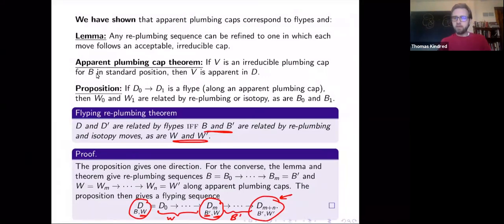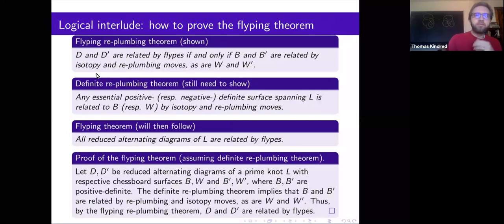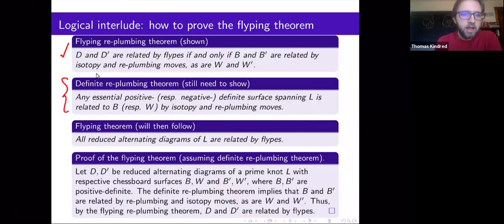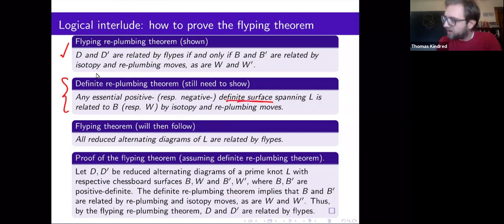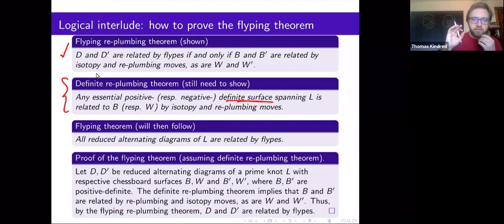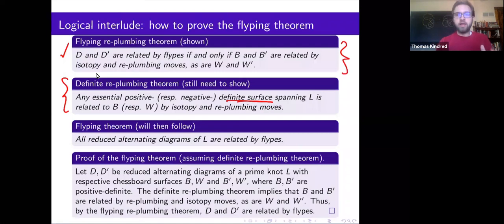How is the proof of the Flype theorem going to go? The key theorem says: if you have any essential positive definite surface, it's related to any other essential positive definite surface spanning the same link by isotopy and re-plumbing moves. And the first theorem says if they're related then the diagrams are flype-related, so it immediately follows that any reduced alternating diagrams are related by flypes.